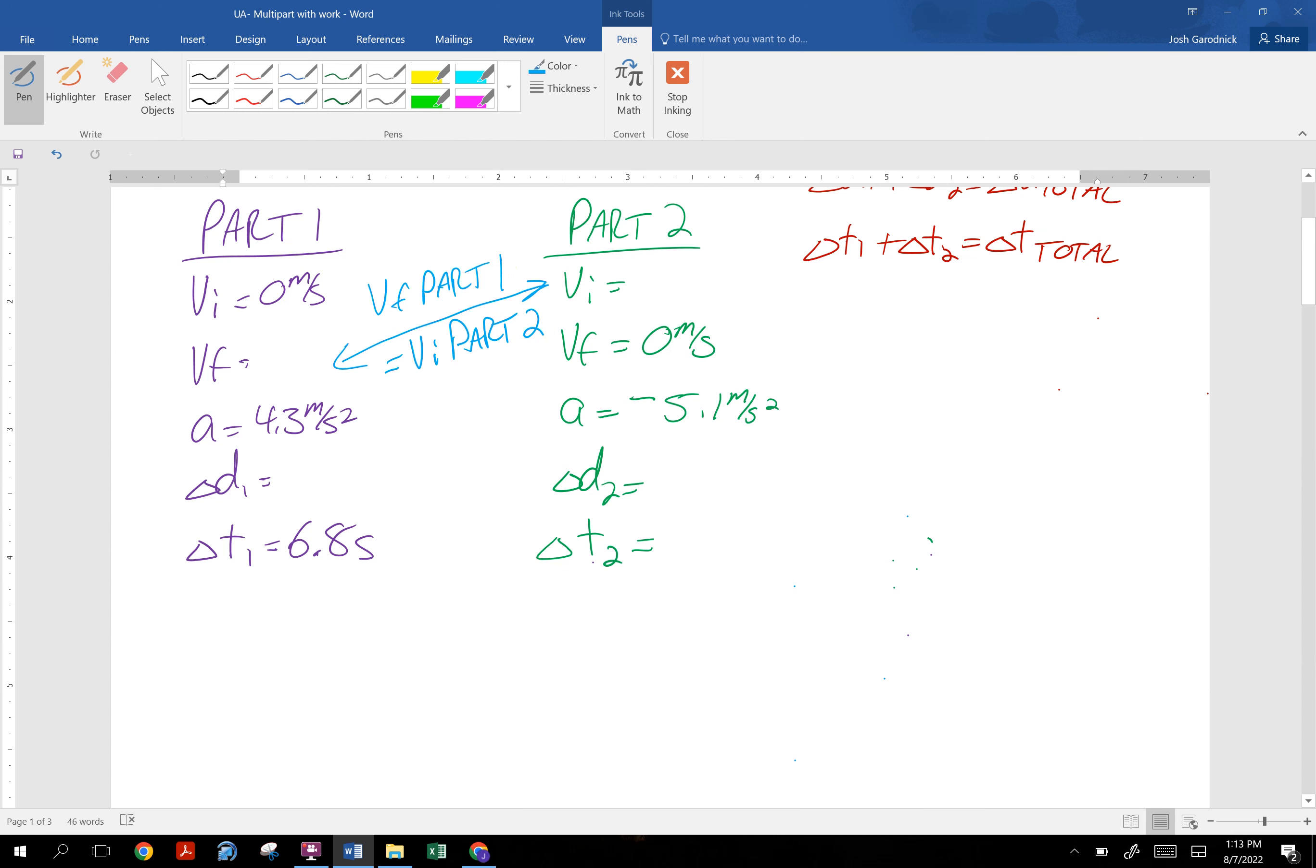That's a huge concept. So you definitely need to get the final velocity of part one. Let's do that right now. I'm going to choose math rep number two: final velocity equals initial velocity plus acceleration times time. This was zero, equals 4.3 meters per second squared times 6.8 seconds, giving us a final velocity of 29.2 meters per second.